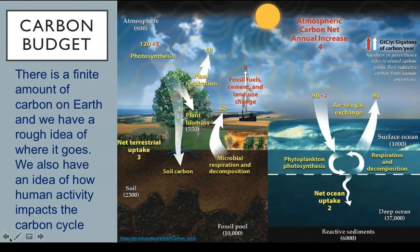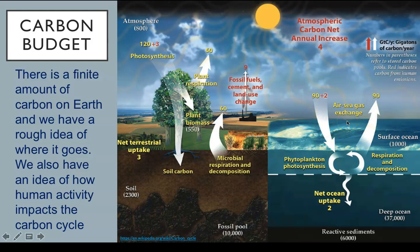There is a finite amount of carbon on Earth, and we have a rough idea of where it goes. We also have an idea of how human activity impacts the carbon cycle. The burning of fossil fuels, the making of cement, and land use changes such as deforestation all result in additional carbon dioxide entering the atmosphere. This can be offset by photosynthesis and by absorption of CO2 by the oceans, but these offsets do not compensate our activities. There is a net annual increase of carbon dioxide into the atmosphere.